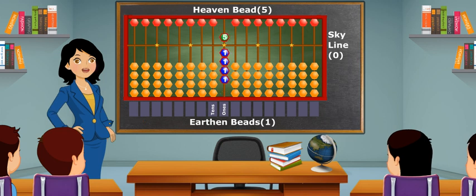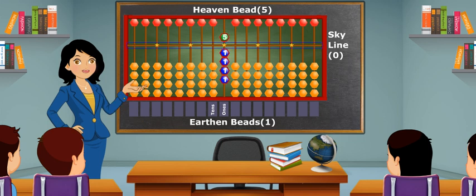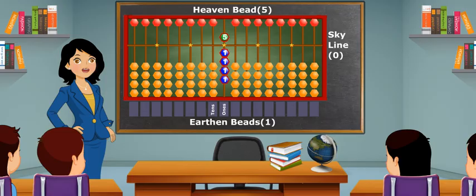To make 9, all the beads touch the skyline. That is, 5 heaven plus 4 earthen equals 9.